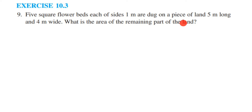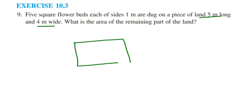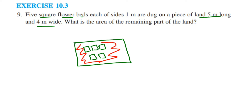They have given that there is a piece of land whose length is 5 meters and breadth is 4 meters. Suppose this is a piece of land — in this piece of land we have dug 5 square flower beds. We have to find out the remaining area, meaning the area where the flower bed is not present.